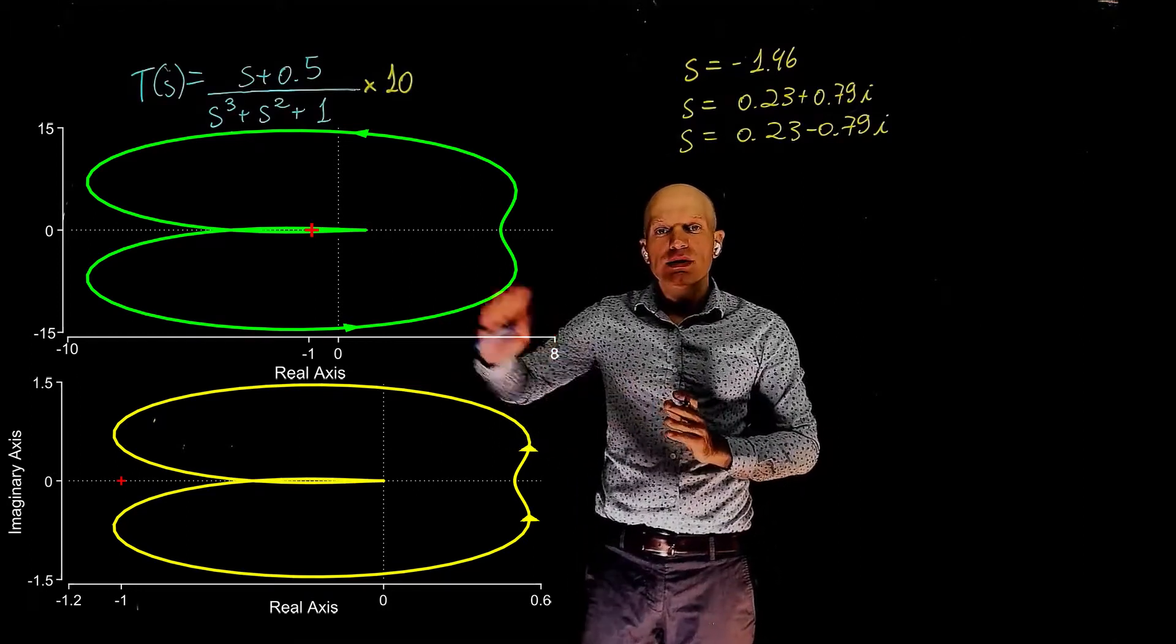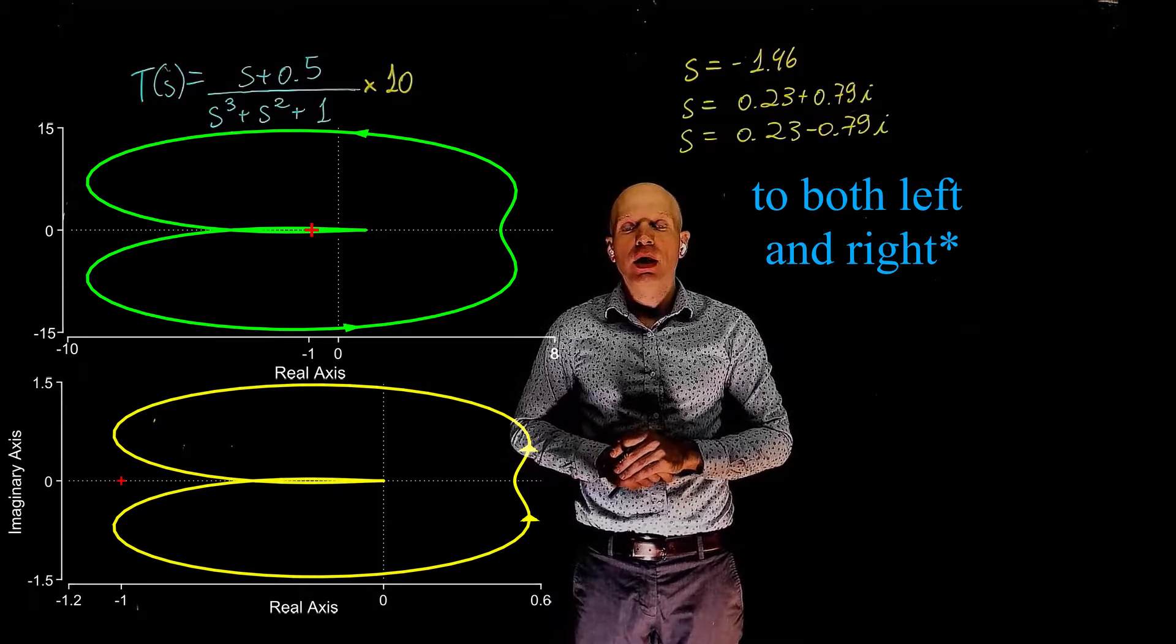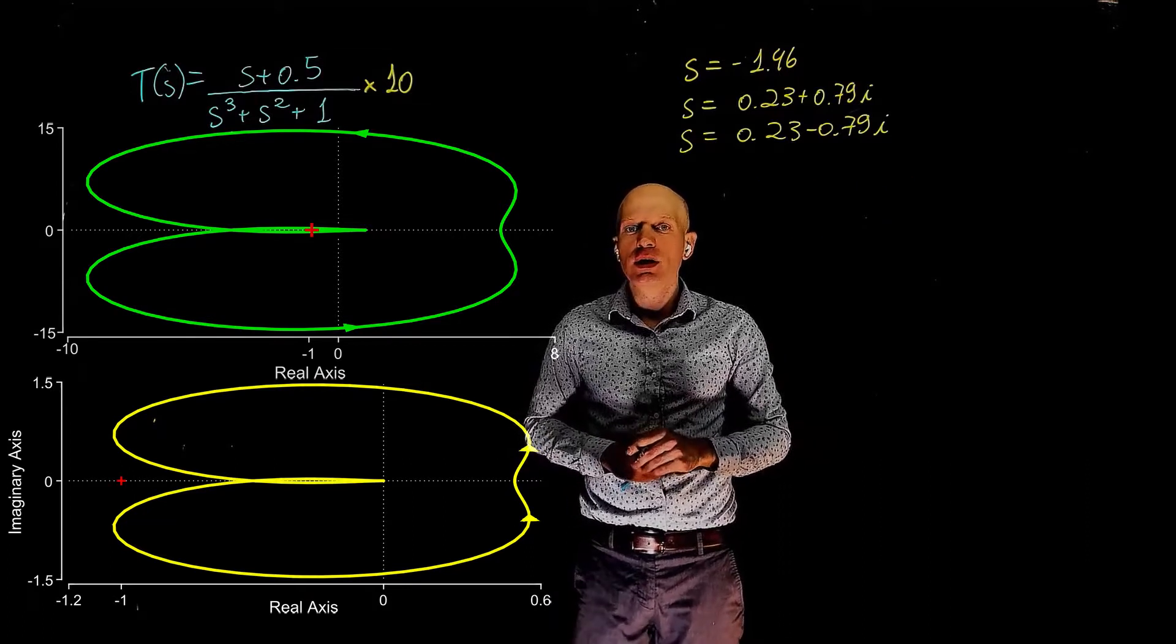We see that the entire Nyquist plot expanded to the right, and now the number of encirclements of negative 1 may have changed.